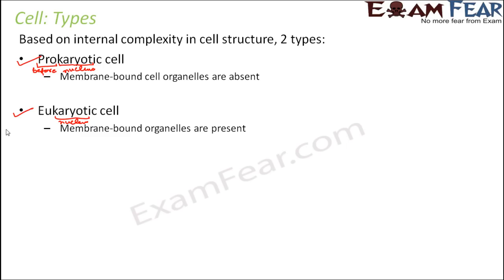Whereas eukaryotic cell — the word 'eu' means true — that means cell with a true nucleus. So here we have membrane-bound organelles present. The picture shown in the previous slide where all the organelles were numbered was basically a picture of a eukaryotic cell, because each organelle — whether nucleus, mitochondria, or ribosome — was distinctly seen, each covered by a membrane.